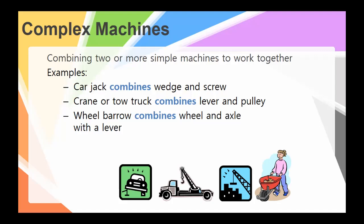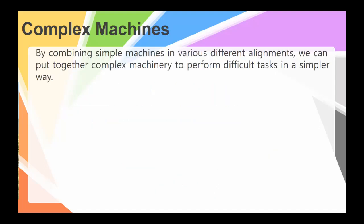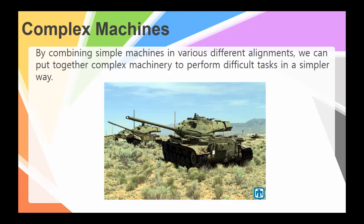And it doesn't have to be just two working together. We can make very complex things, like the computer we're working on, or maybe let's say something like a tank. There are tons of examples. You might take a minute to pause the video and see if you can identify how many different simple machines can be found in this one image of the tank.